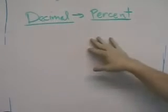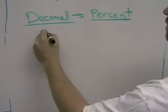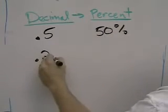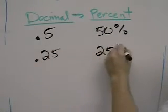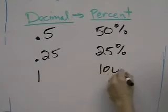To turn a decimal into a percent, we begin with some common decimals that we all know. 0.5 is 50%, 0.25 is 25%, and one whole is 100%.